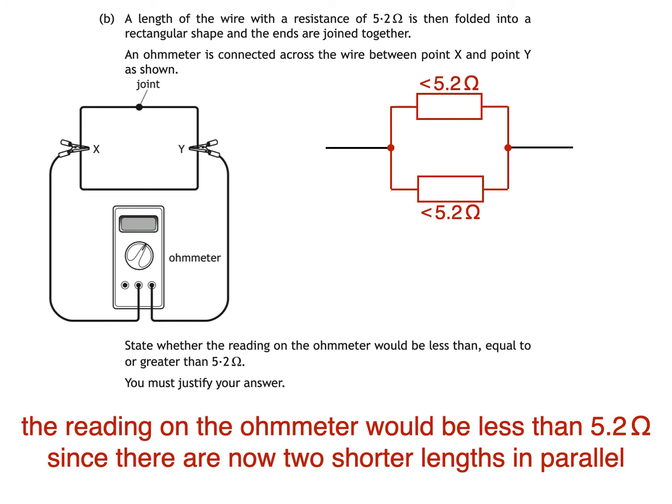If you're really on the ball then you'll realize that each half length of wire would have a resistance of 2.6 ohms. That's half of 5.2 ohms. And when you add two 2.6 ohm lengths in parallel the overall resistance or effective resistance would be 1.3 ohms. Anyway you don't need to actually calculate this for the question.